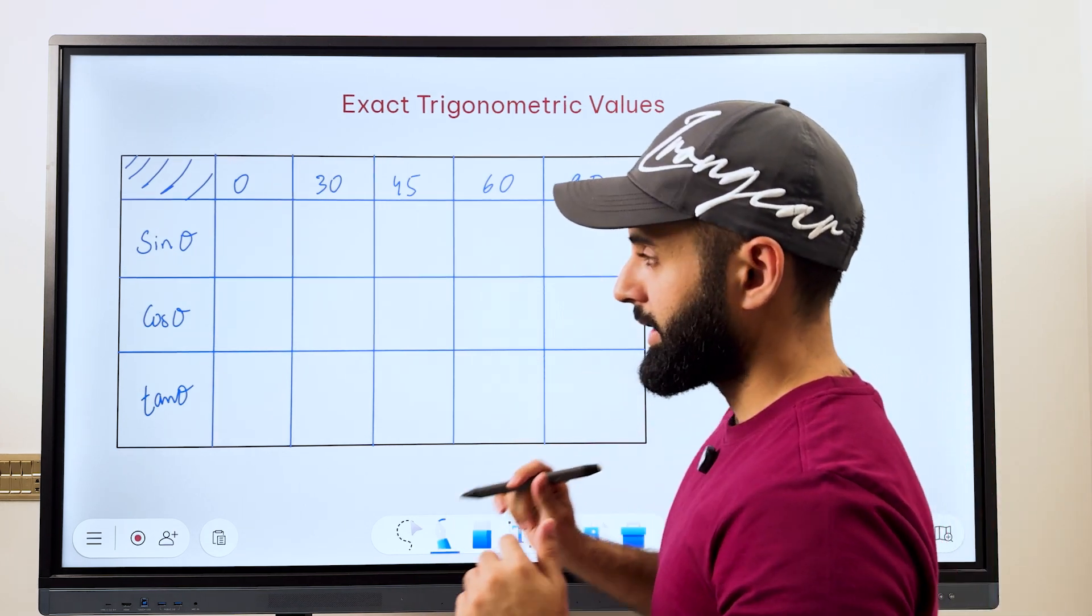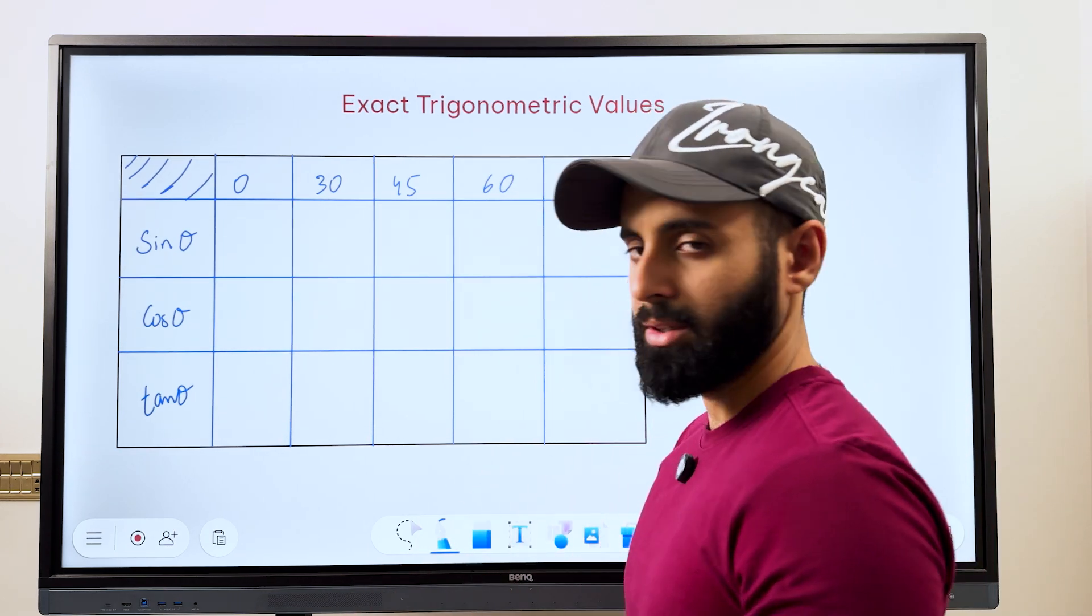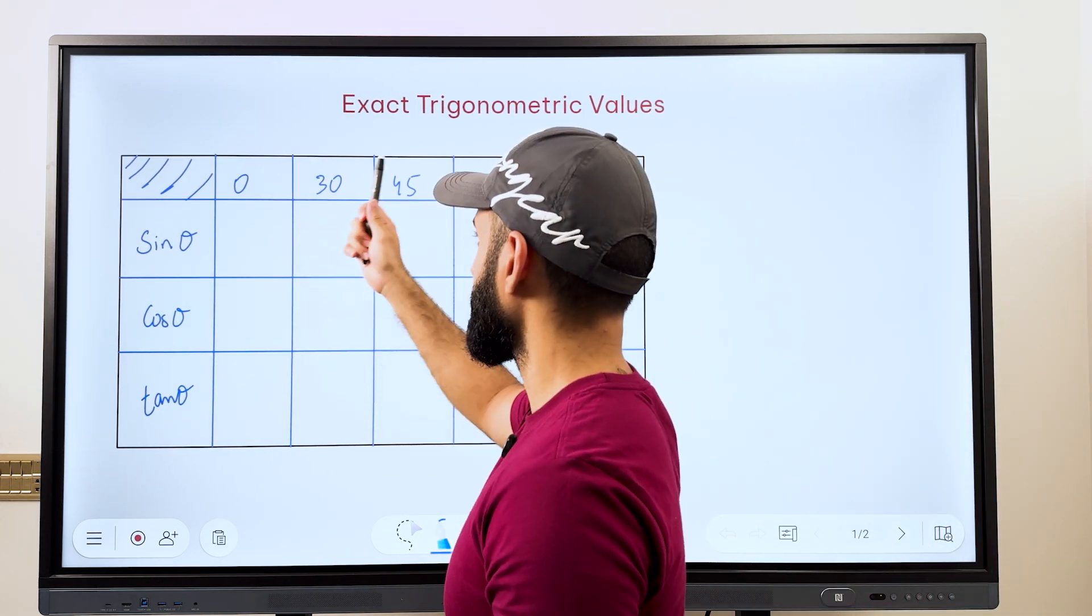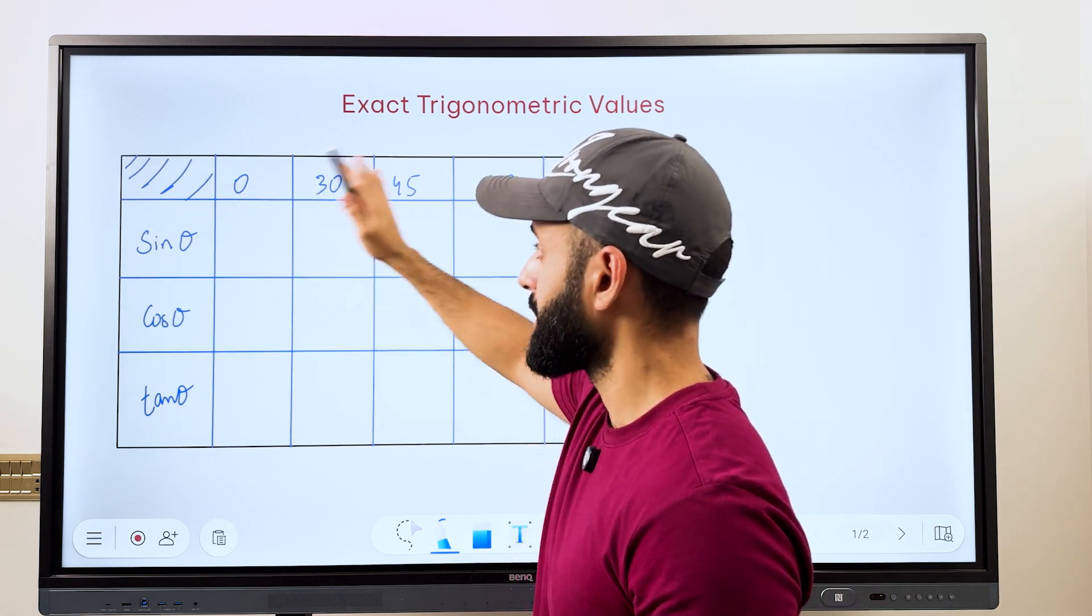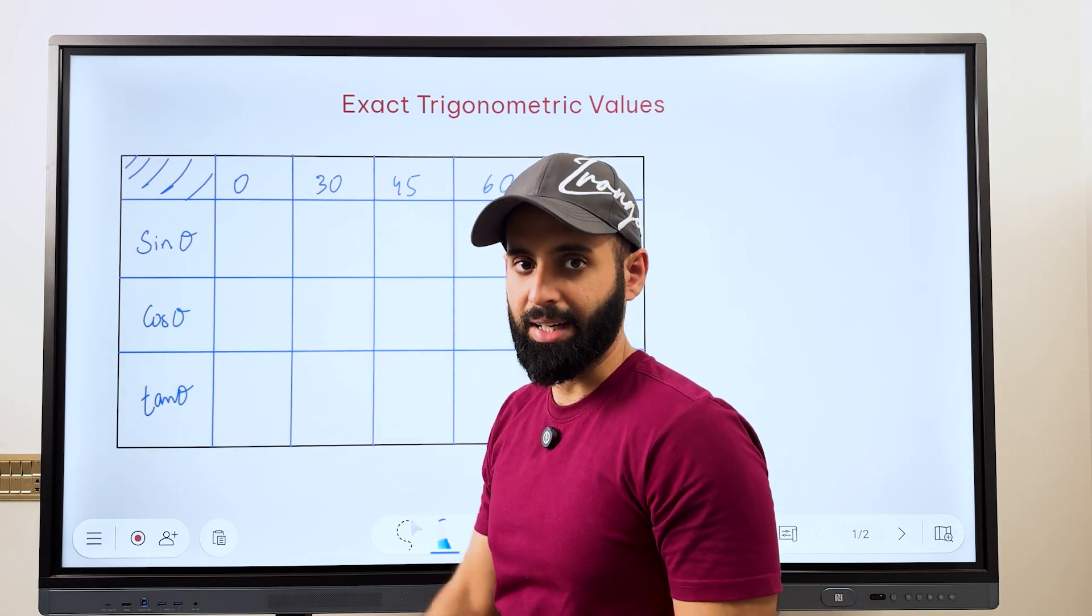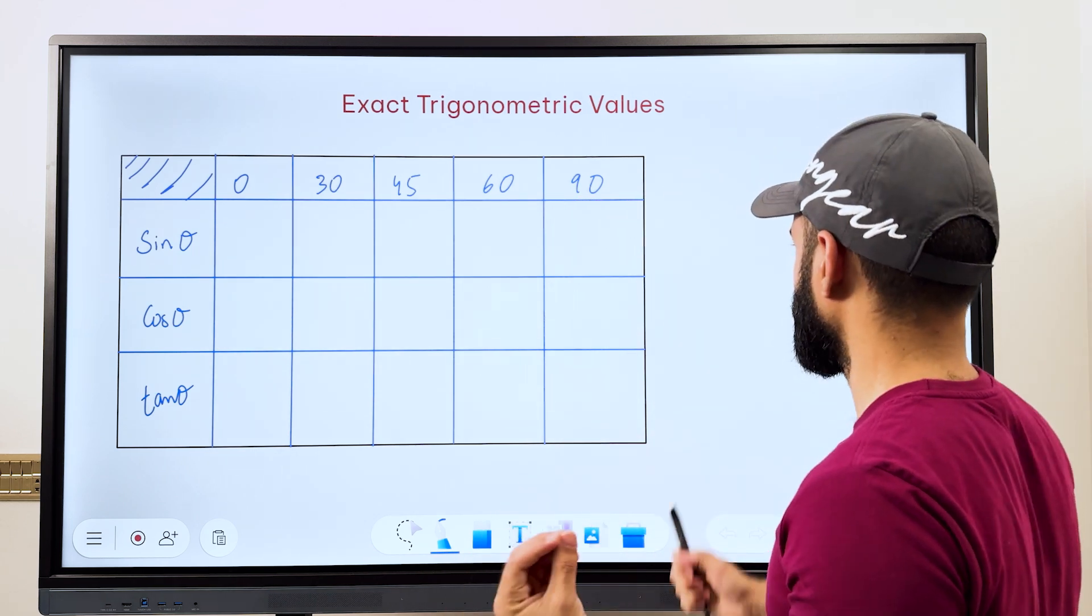So do keep in mind that the important angles or we call them special angles are 0, 30, 45, 60 and 90 and you need to know the values of these angles for sin, cos and tan. So the trick is as follows.